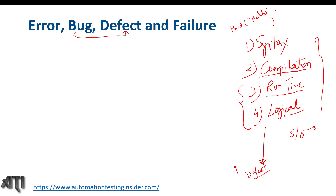What do we mean by bug and defect? If you see any deviation or difference in the software with respect to expected result and actual result — if you see a difference between actual outcome and expected outcome — that is nothing but a bug or defect.